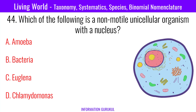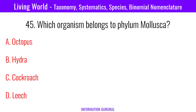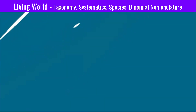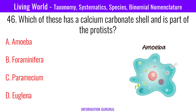Which of the following is a non-motile unicellular organism with a nucleus? Amoeba. Which organism belongs to phylum Mollusca? Octopus. Which of these has a calcium carbonate shell and is part of the protists? Foraminifera.